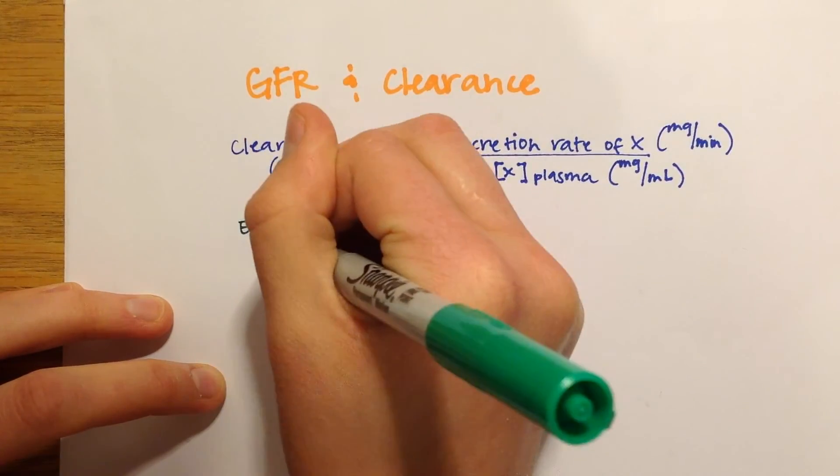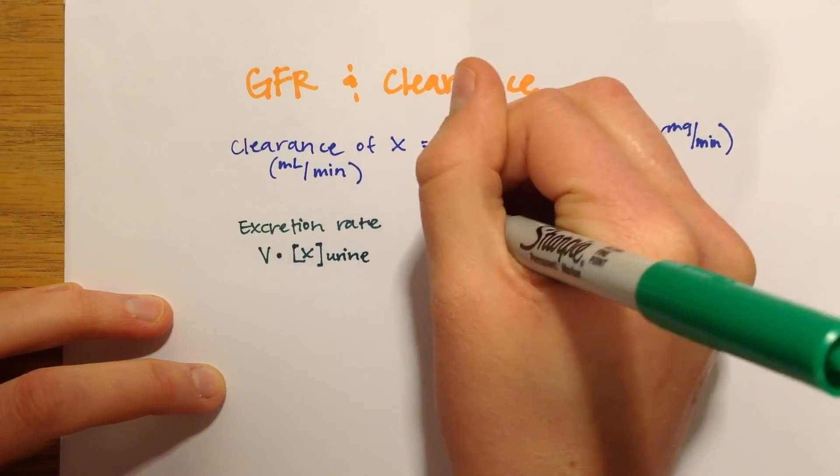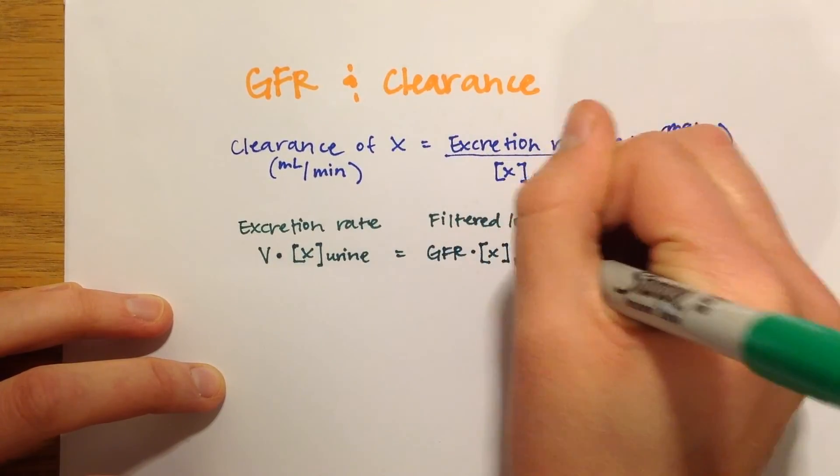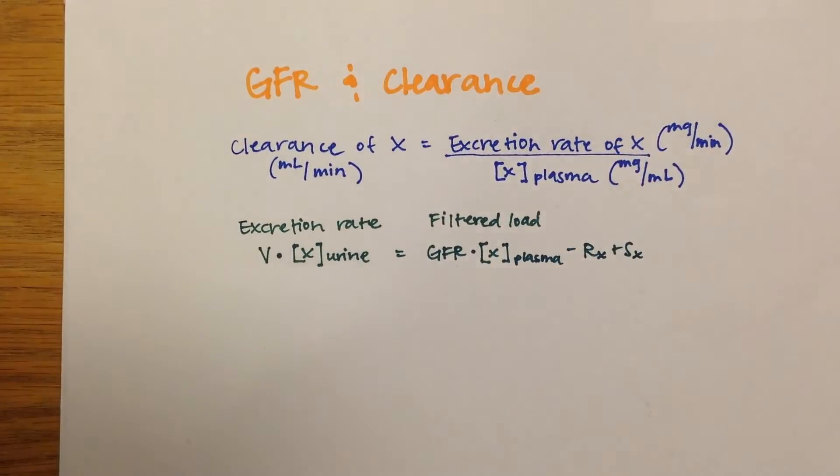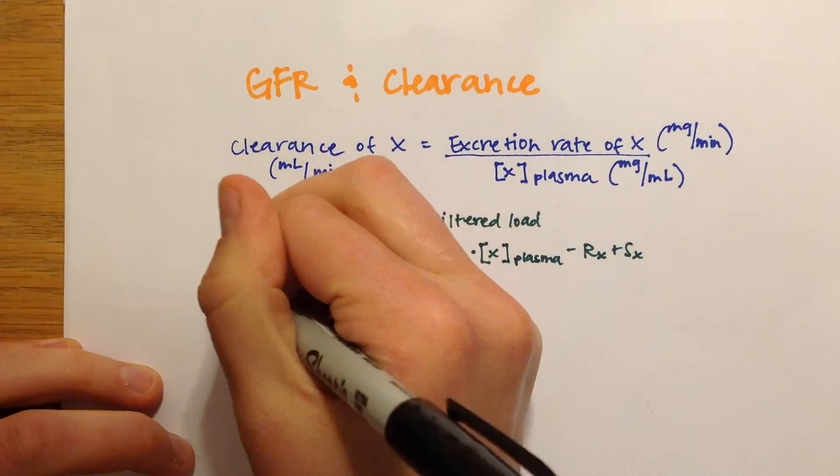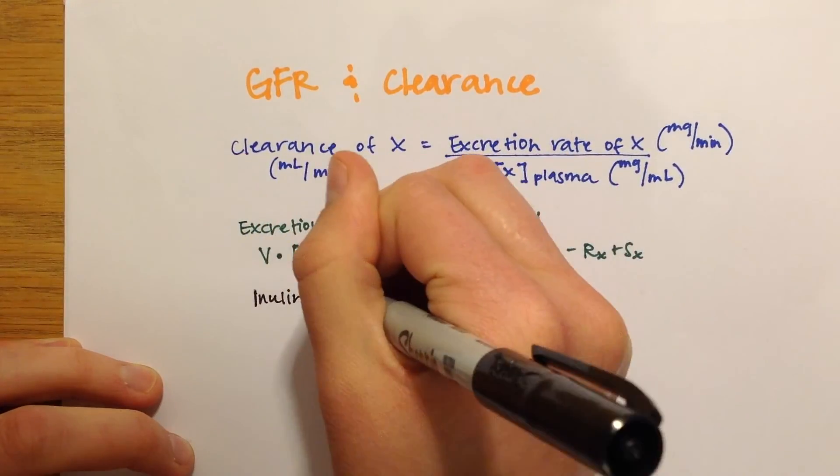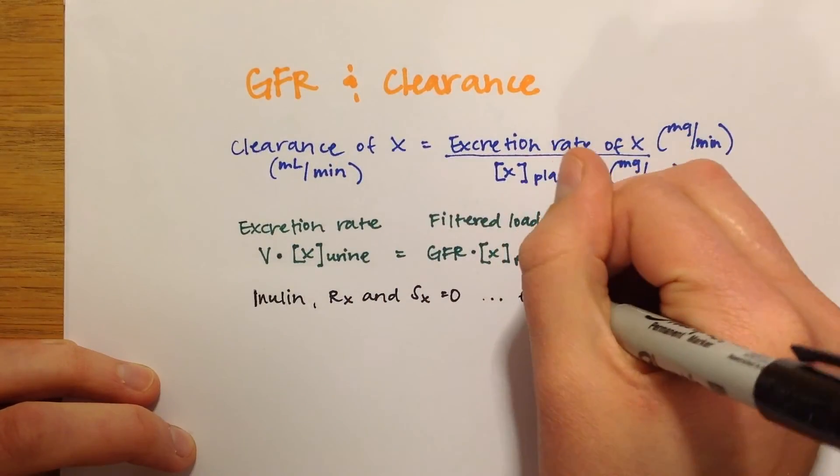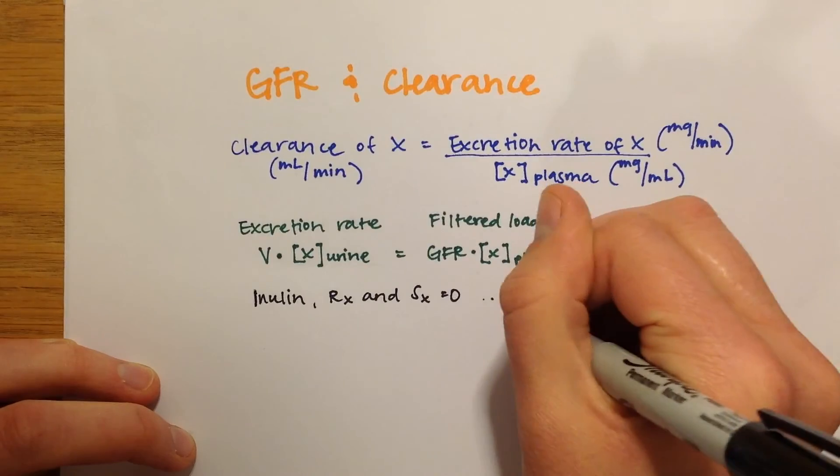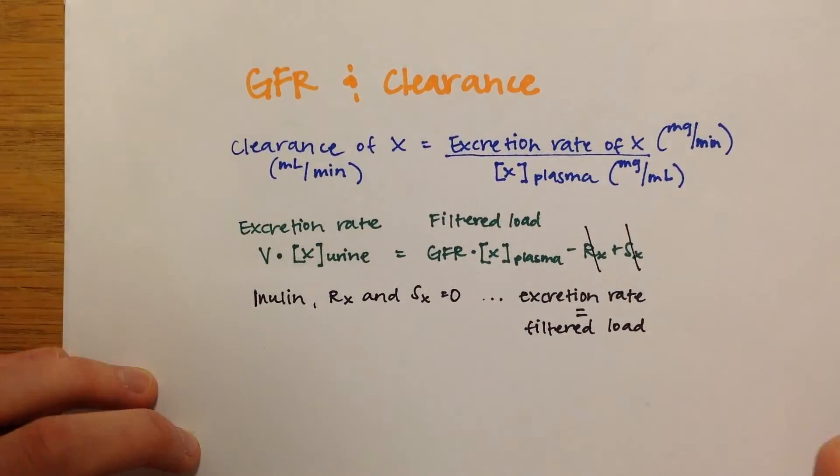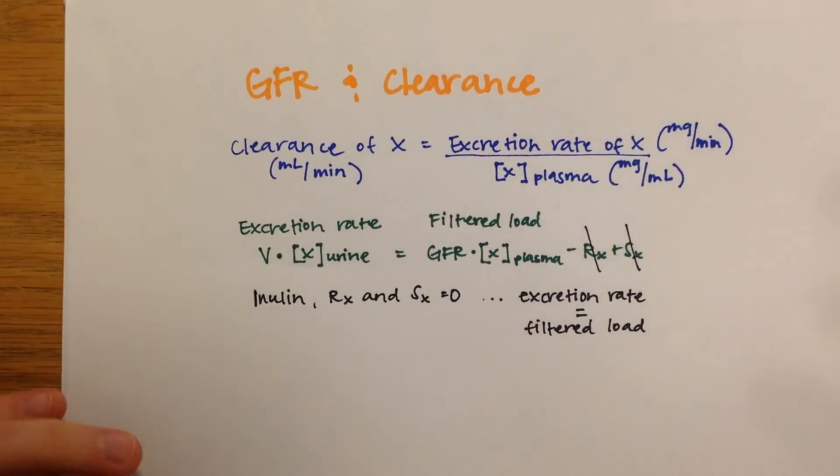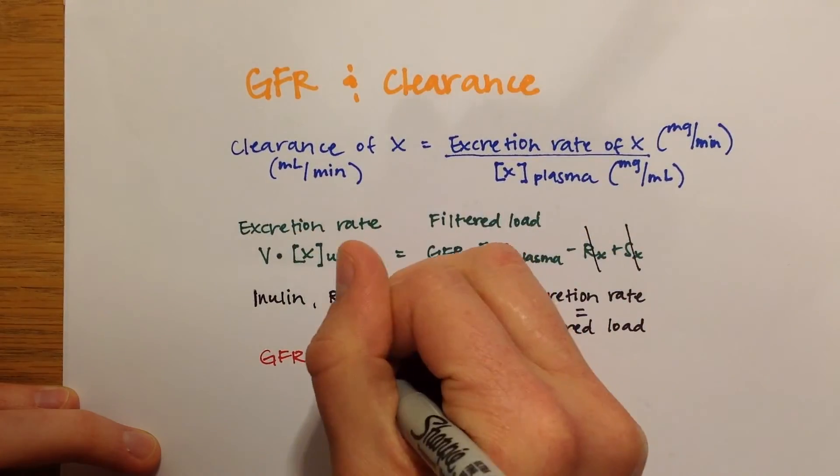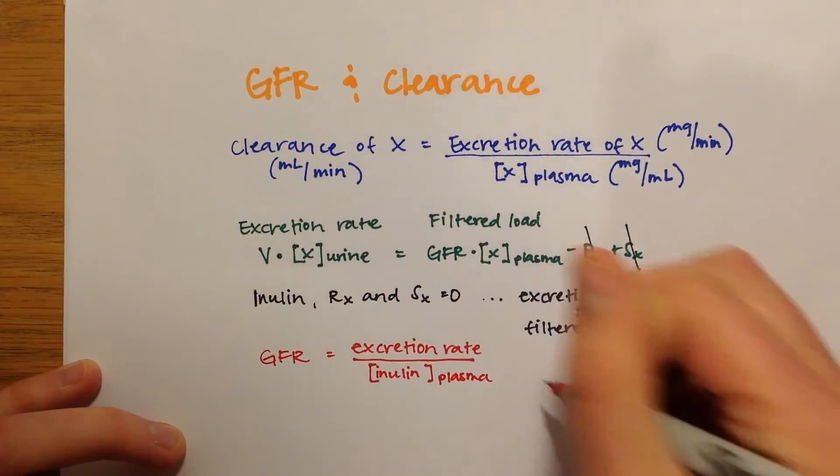Another way to calculate excretion rate is the filtered load, which is the GFR times the concentration of the substance in the plasma, minus the amount reabsorbed, plus the amount secreted. In our example using inulin, we could easily calculate its GFR because it is neither reabsorbed or secreted. Therefore, excretion rate would be equal to the filtered load, and GFR would be equal to the excretion rate divided by the concentration of inulin in the plasma. Notice that this is the same equation as the clearance equation, so GFR for inulin is the same as the plasma clearance.